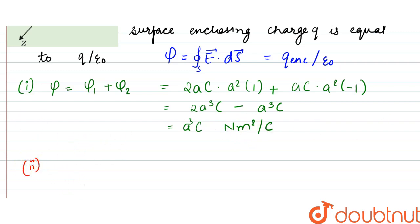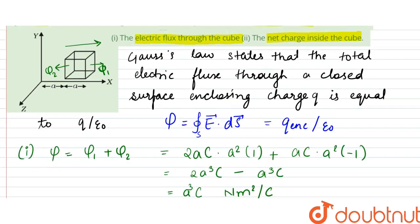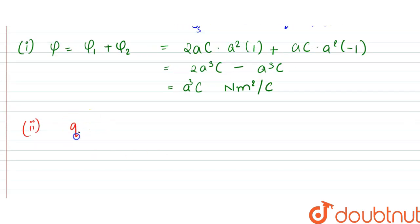For second, the net charge inside the cube: Q by epsilon naught is equal to the flux. That implies that the charge enclosed Q would be equal to epsilon naught A cubed C. So this would be in Coulomb. This would be the answer. Thank you.